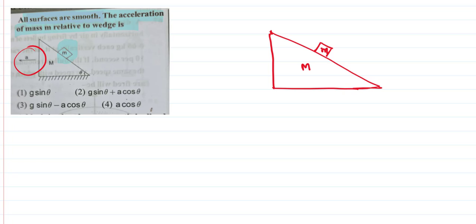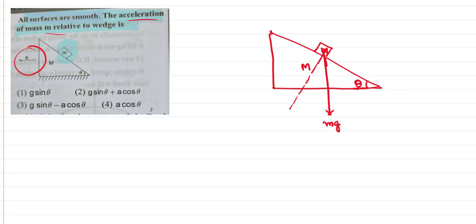There is an acceleration acting on the body towards the left — we will talk about that in a few minutes. This angle is theta, and we want the acceleration of small m. We shall identify the forces acting on the small mass: it has its weight acting always in a downward direction, Mg. We can resolve that weight into components. Since this angle is theta, this angle is also equal to theta — we have proved that many times.